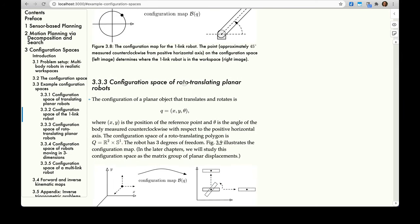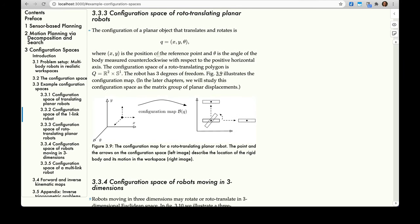Configuration space of the rototranslating planar robot. The configuration of a planar object that translates and rotates is (x, y, theta): the two translational positions and theta, the orientation. So x and y is the position of the reference point and theta is the angle of the body measured counterclockwise with respect to the positive horizontal axis as we usually do.